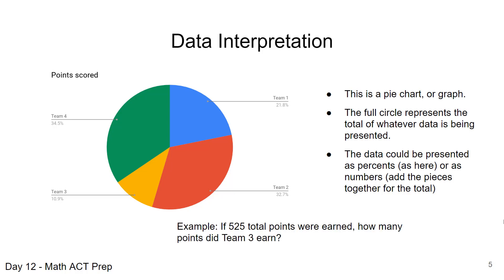For example, if 525 total points were earned by these four teams, how many points did Team 3 earn? We want to look at the yellow section representing Team 3, which is at 10.9 percent. So we know we have a total of 525 points. We multiply that by 10.9 percent, which is 0.109 as a decimal, and you get 57.2 points.